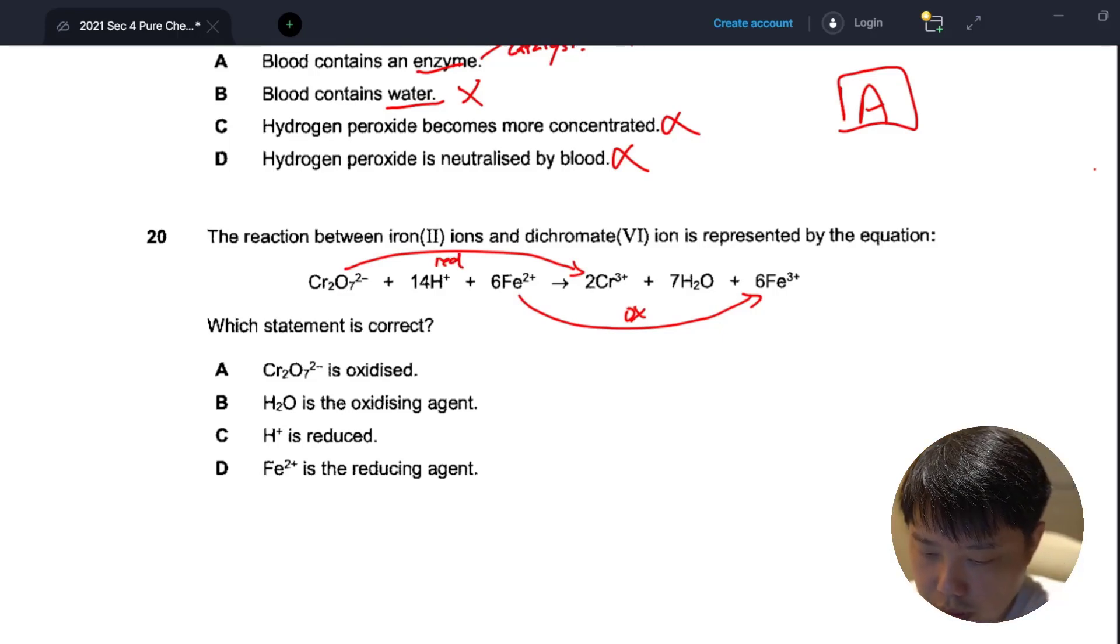Which statement is correct? Dichromate is oxidized - definitely not, it is being reduced. Water is the oxidizing agent? No, water does not oxidize anything here. It is one of the products. The oxidizing agent actually is your dichromate.